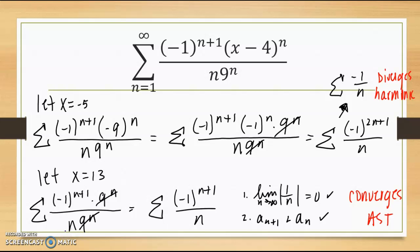So to answer the question, my radius of convergence is 9. My interval of convergence, I exclude negative 5 and I include 13. So you'll be doing quite a few problems that have centers that are not at zero.